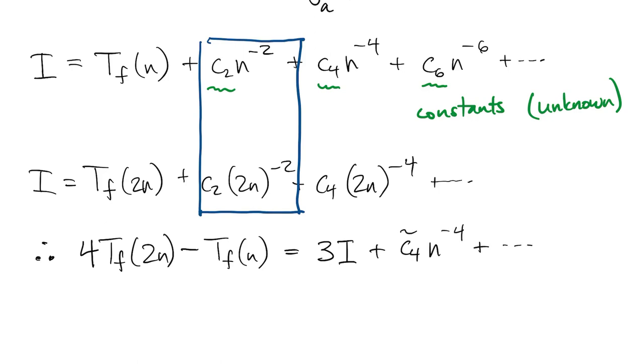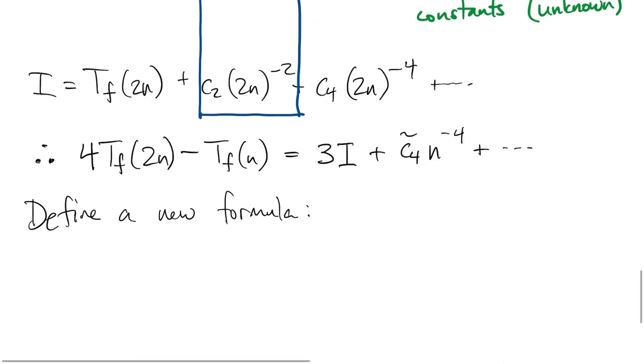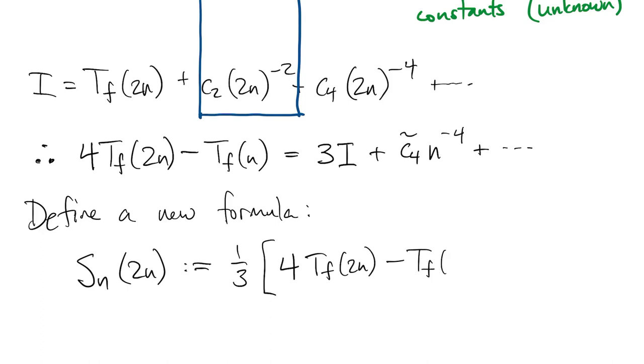This inspires the definition of a new formula. We'll take that linear combination of t's and divide it by 3, and that should give us a new estimate for i that I call S. In fact, this is exactly Simpson's formula.